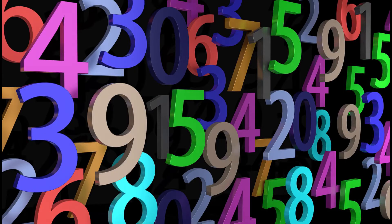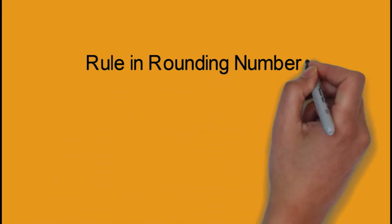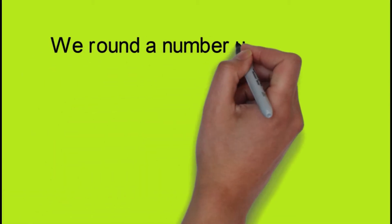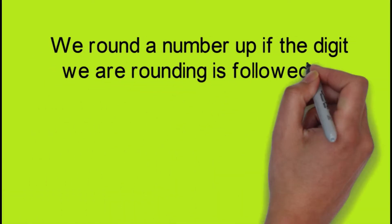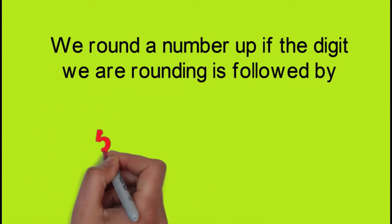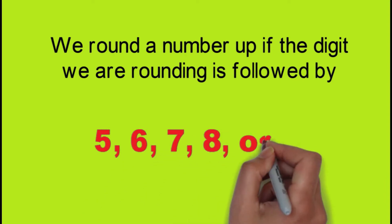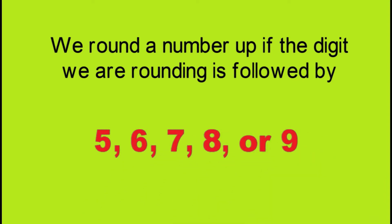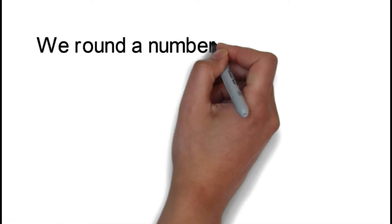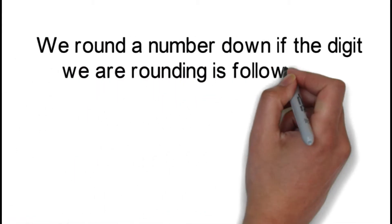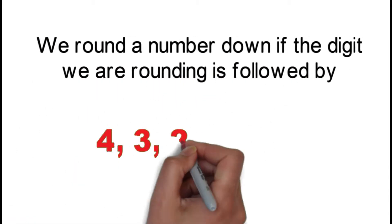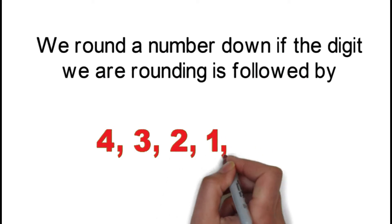When rounding numbers, it is very much important that we know the rule in rounding numbers. The rule says that we round a number up if the digit we are rounding is followed by 5, 6, 7, 8, or 9. And we round a number down if the digit we are rounding is followed by 4, 3, 2, 1, or 0.